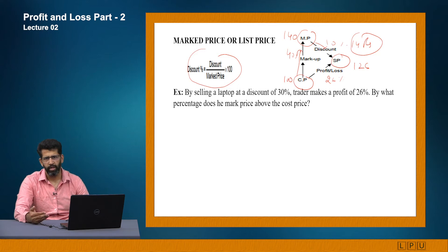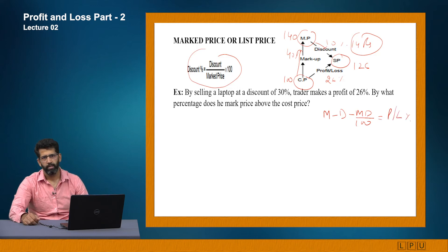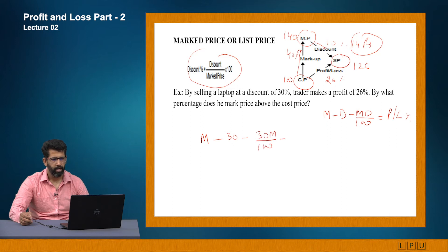The formula for this is: marked percentage minus discount percentage minus (marked percentage × discount percentage / 100) = profit or loss percentage. Now, example: by selling a laptop at a discount of 30%, a trader makes a profit of 26%. By what percentage does he mark the price above the cost price? Using the formula: M - 30 - (30M/100) = 26. Rearranging: 100M - 30M = 5600, so 70M/100 = 56, giving M = 56/7 × 10 = 80%. The marked-up percentage is 80%.